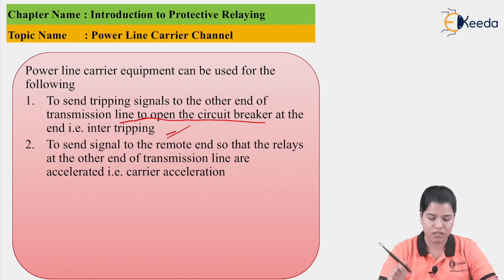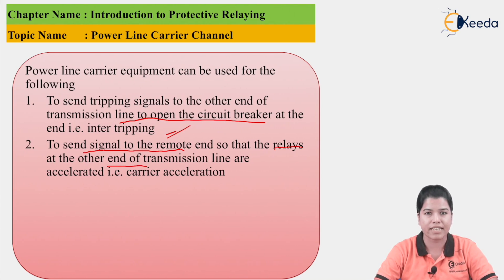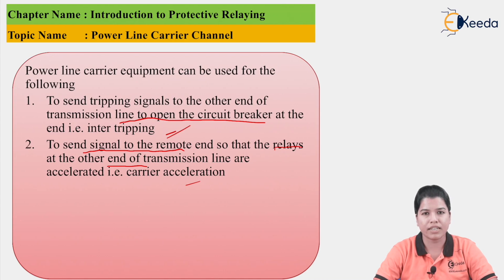Next is to send the signal to the remote end so that relays at the other end of the transmission line are accelerated. This is called carrier acceleration. When fast tripping operation is to be performed, the relay operation should be accelerated. The power line carrier channel can be used to send the signal from the sending end to the receiving end to the relays so that relay operation can be accelerated.